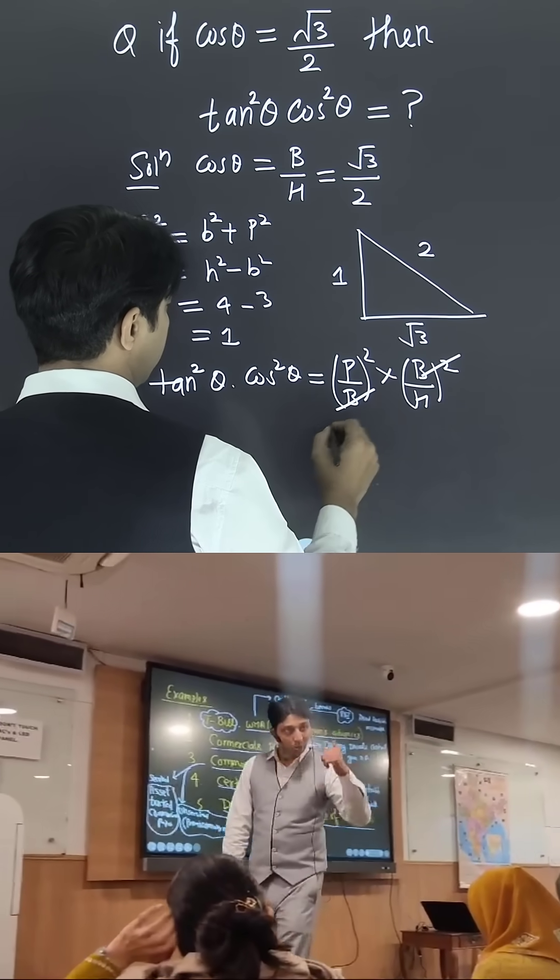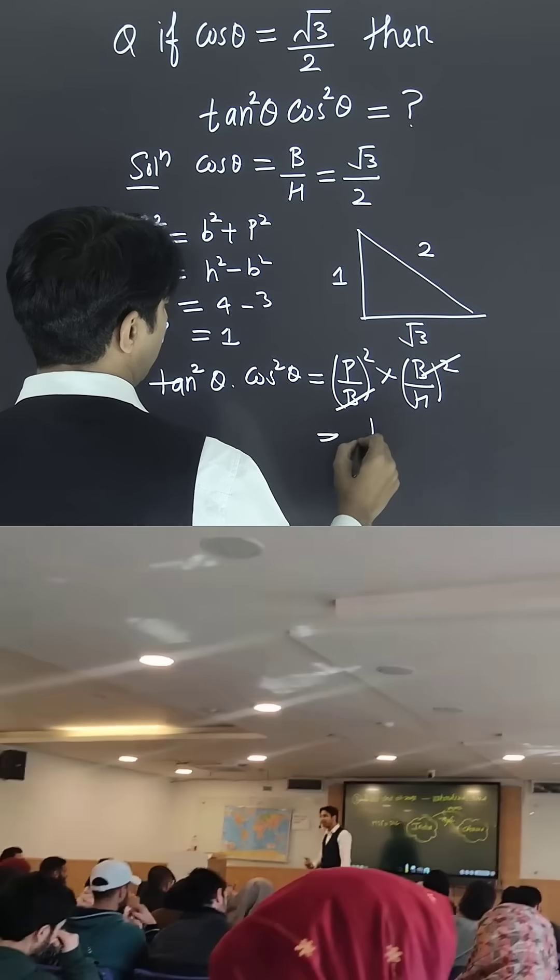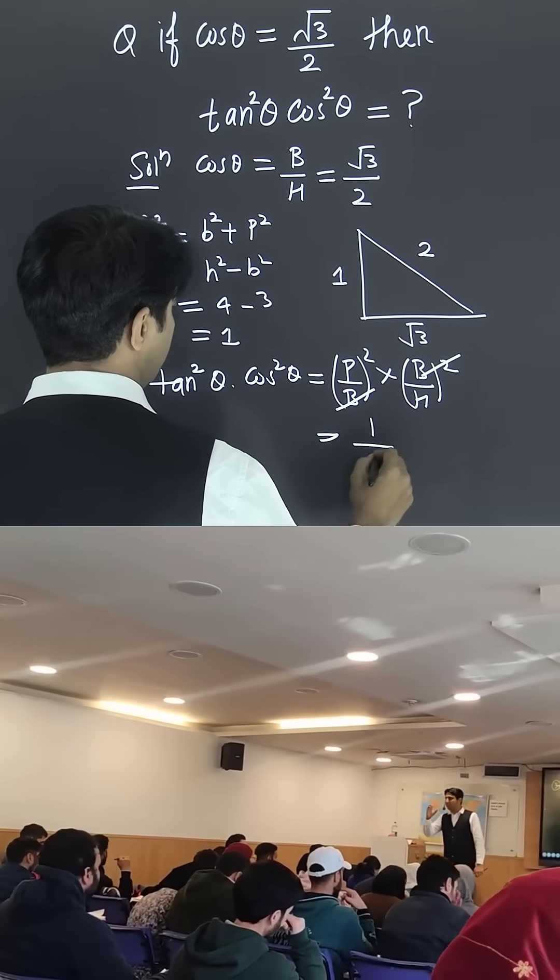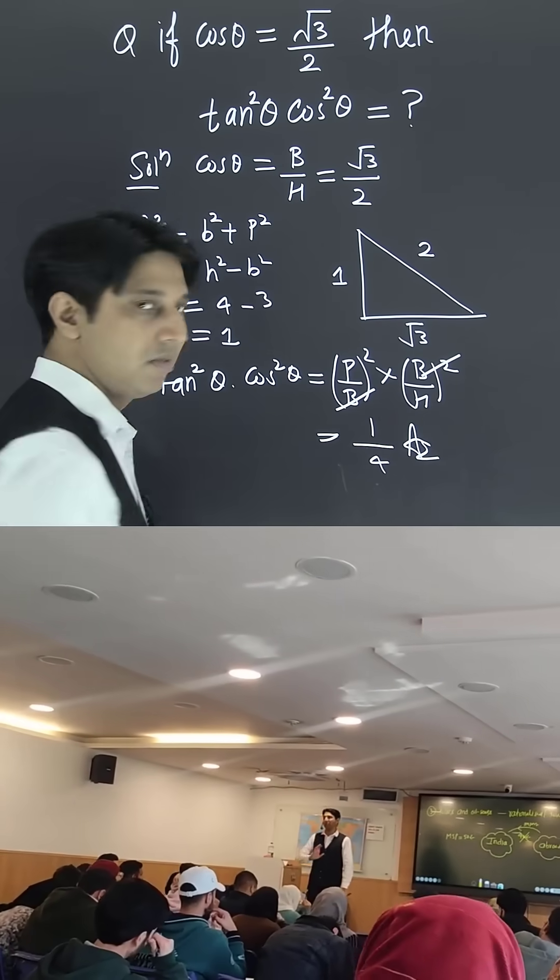Times what is the value of cos θ? It is nothing but base divided by hypotenuse, squared. Base squared, base squared cancel out, perpendicular squared means it will become 1. Hypotenuse squared is 4. So, 1/4 is the right answer. Thank you.